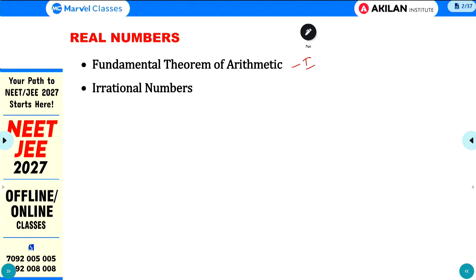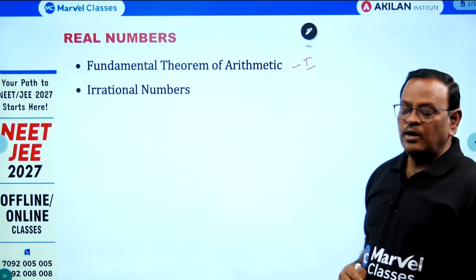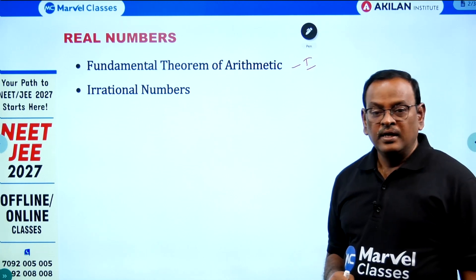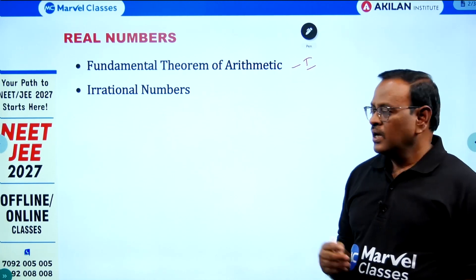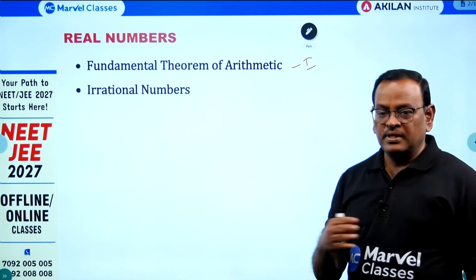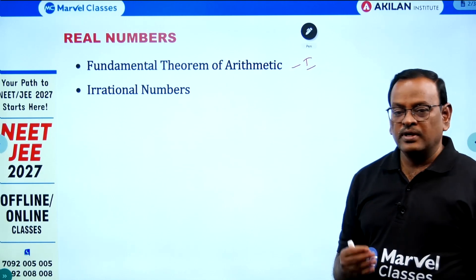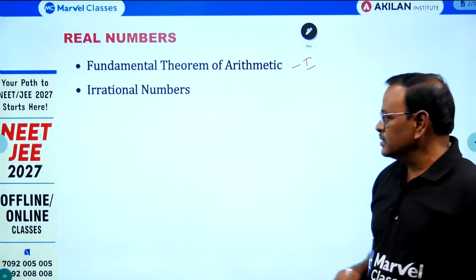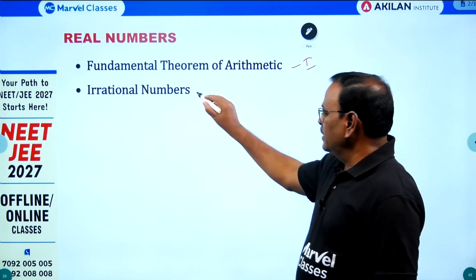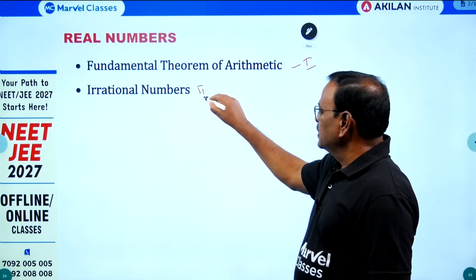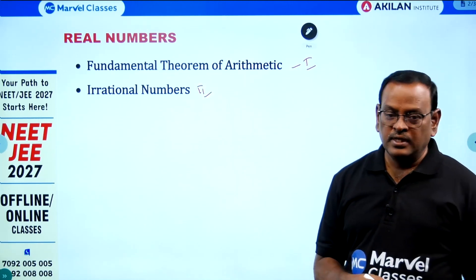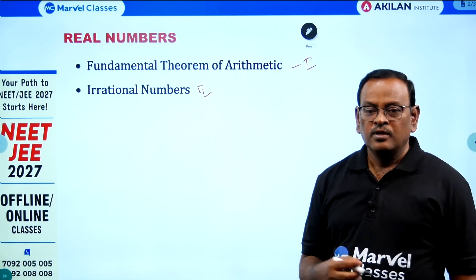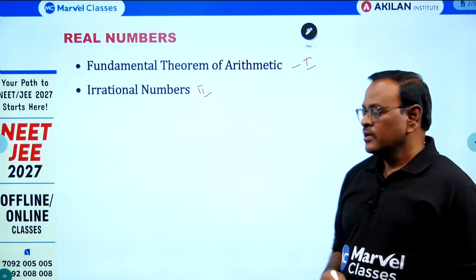Word problems based on HCF and LCM, and how to find HCF and LCM of two numbers and three numbers. Apart from standard questions, you can prepare for one-mark and two-mark questions. In irrational numbers, you have standard questions: prove that root 2 is irrational, root 3 is irrational, 2 plus root 3 is irrational, and similar problems.